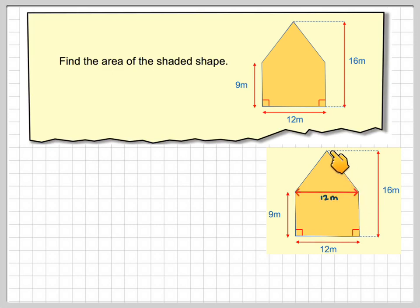If we put a line down here we can see easily that we have a triangle and here we have a rectangle. This length will be 12 meters, the same as this length down here.